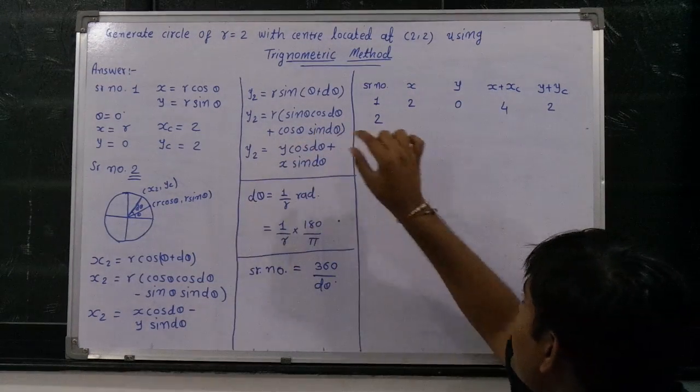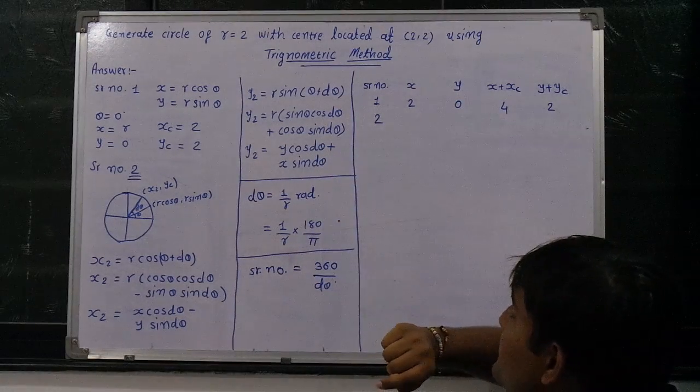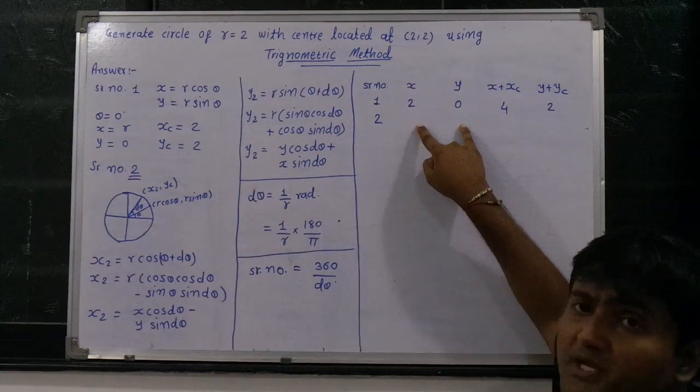Where y and x values are here, and d theta value can be found out from this equation. So the second x2, y2 point will be generated from here.